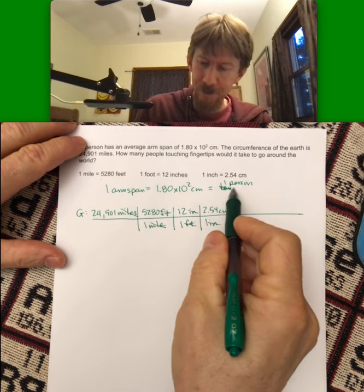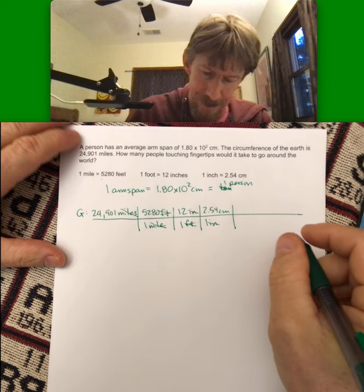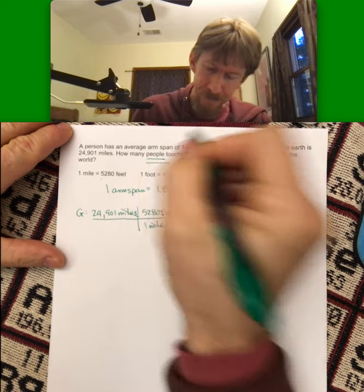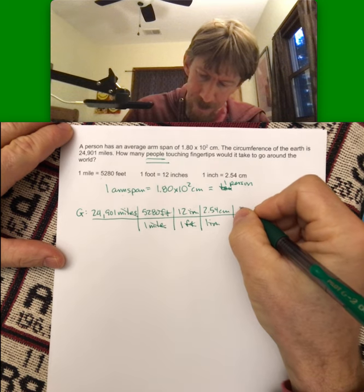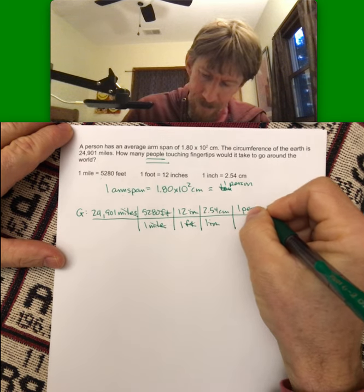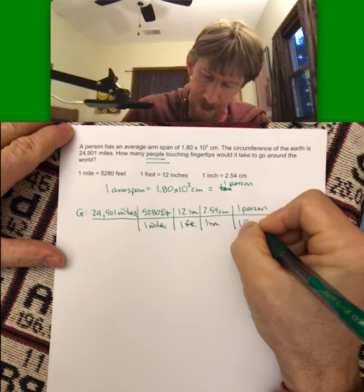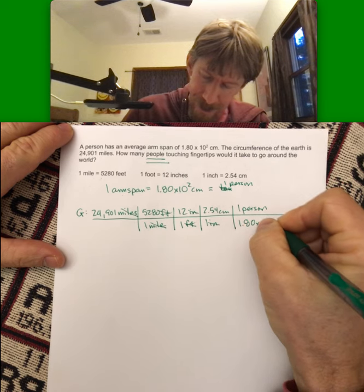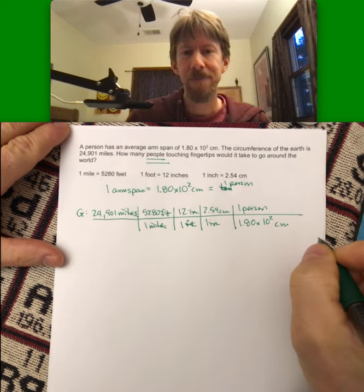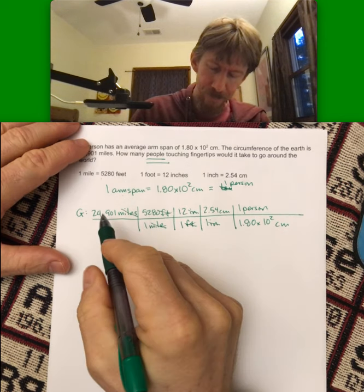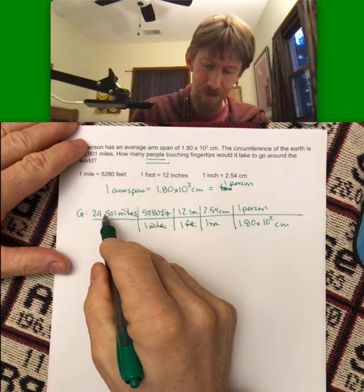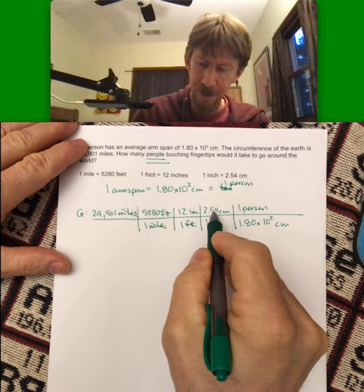Now I've got centimeters and I'm going to have to use this arm span to one person. Since I want people, I will do one person on top and 1.80 times 10 to the second centimeters on the bottom.